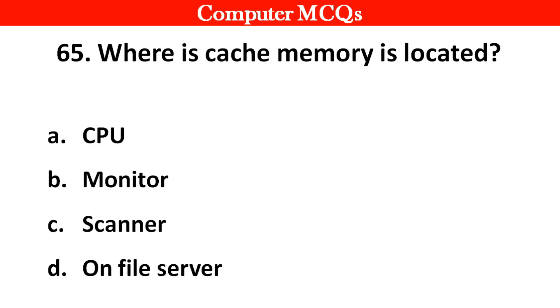Next question: Where is cache memory located? Options A. CPU, B. Monitors, C. Scanners, D. On file server. Right answer is option A: CPU.